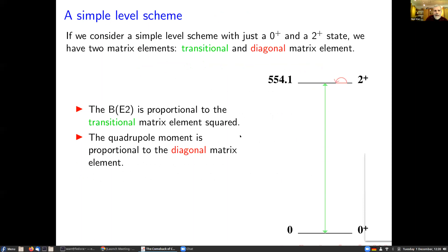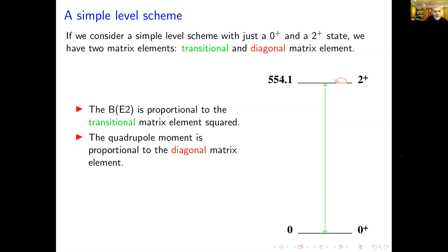Taking a simple level scheme from an experiment on Krypton-96 done about a decade ago with REX-ISOLDE — with quite low beam energies — we actually only excited the first excited state, the 554 keV state. With just a 0+ and a 2+ state, the lowest multipolarity is E2; we could in principle have E4 or M3 but those are negligible. So we're only considering E2 matrix elements, and we have two of them. The first is the green transitional matrix element.